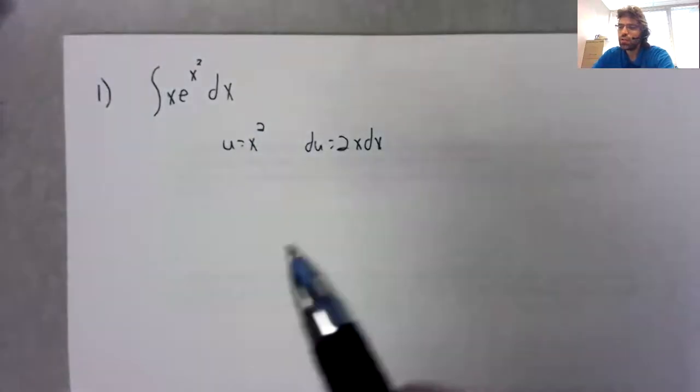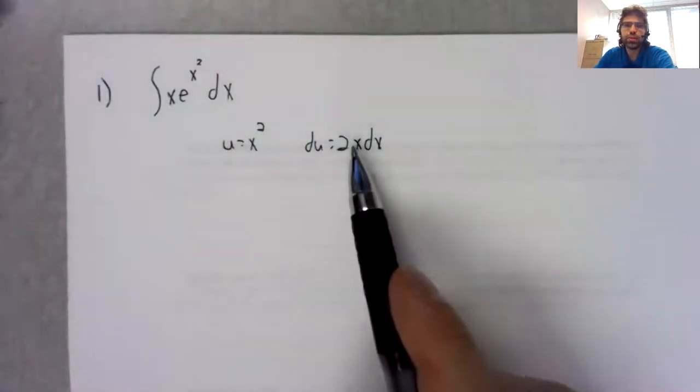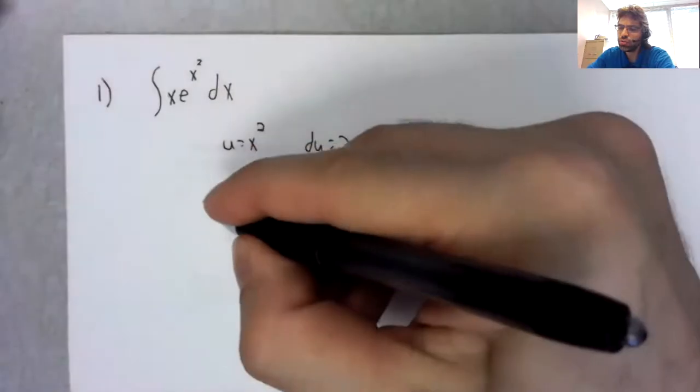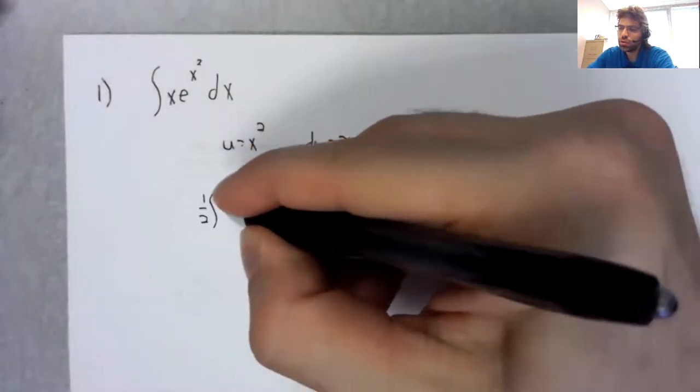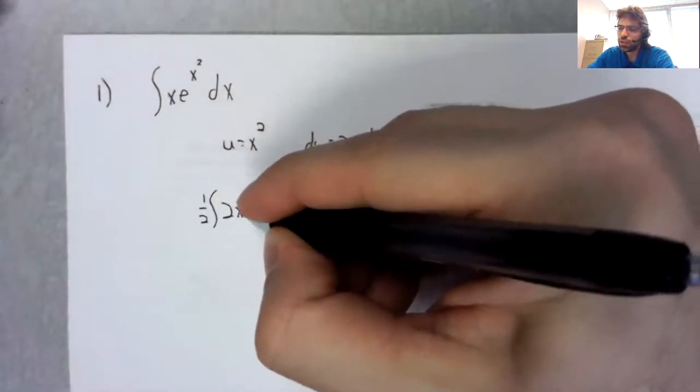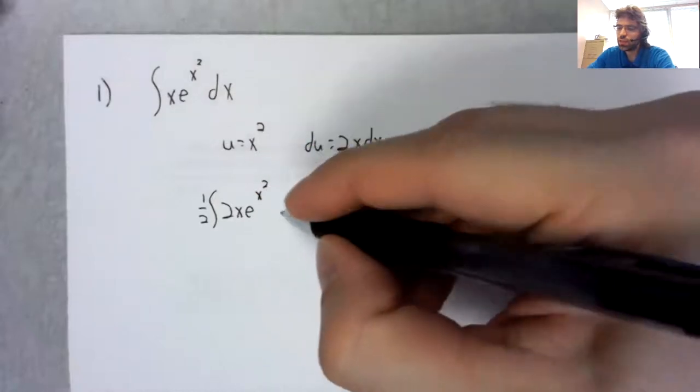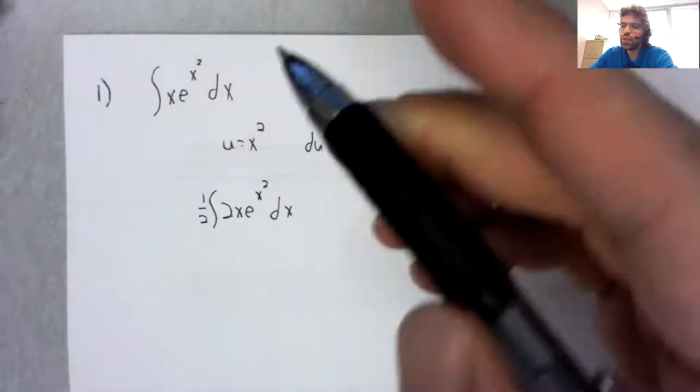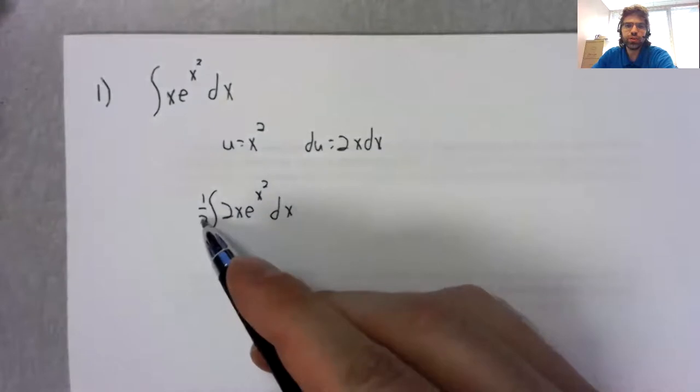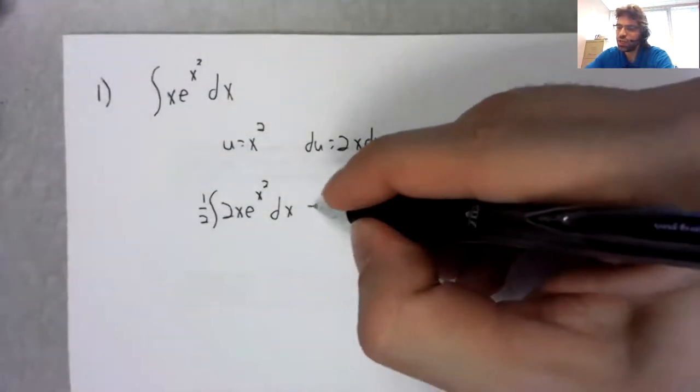We have the x, we don't have the two. But we can put the two in, as long as we also put a one-half in.